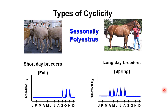In terms of the length of pregnancy, for sheep the length of pregnancy is about five months. The purpose of this is to get the young born and grazing at an optimal time. The same is true for horses.